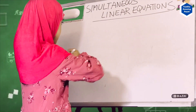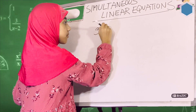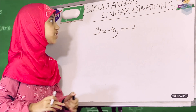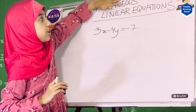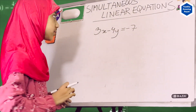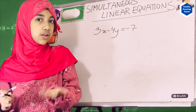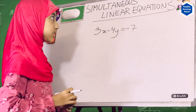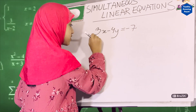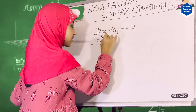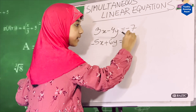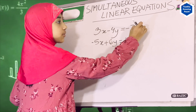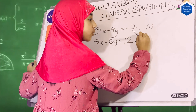Our equation will be 3x minus 4y equals minus 7. It's not just one equation because one equation means it's just a linear equation. Simultaneous means more than one equation — we can have 2, 3, or 5 or whatever. But today we're just going to be working with two linear equations. My other equation is minus 5x plus 6y equals 12. These are my two linear equations.